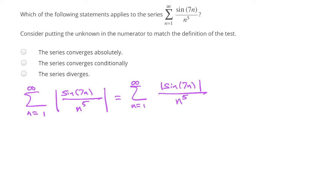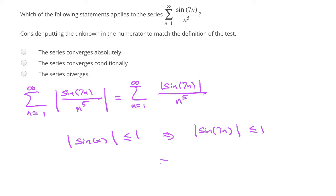One thing we know about sine is that it's going to be bounded. We know the absolute value of sine of x is less than or equal to 1. So the absolute value of sine of 7n is less than or equal to 1, and if we divide both sides by n to the fifth, the terms of our series are bounded by the terms of a p-series with p equal to 5.